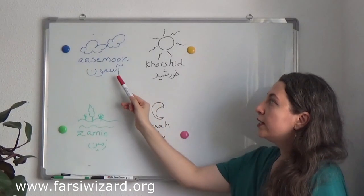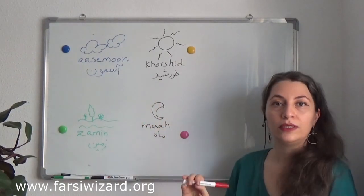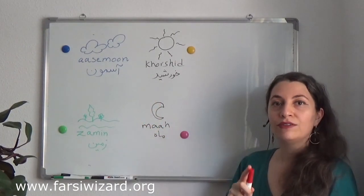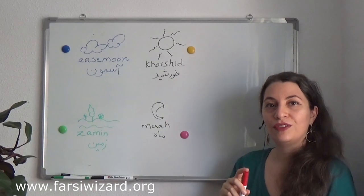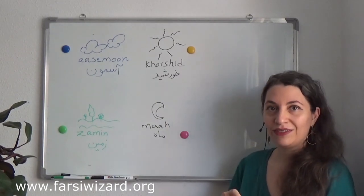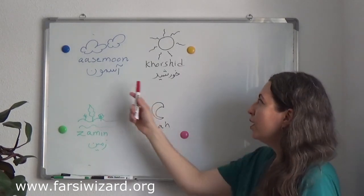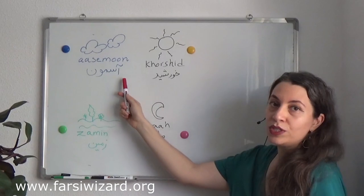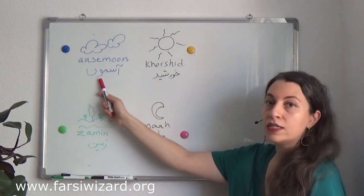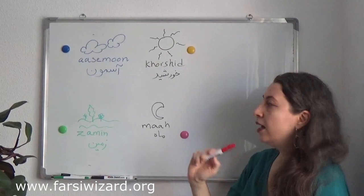Now I know that a lot of you may not be able to read the word yet. Remember, I have created a bunch of videos on how to read the Persian alphabet, so remember to check those. So one more time: asemun — asemun is sky.